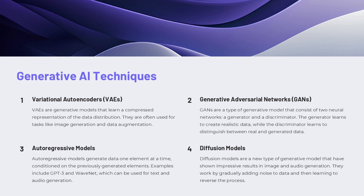Variational autoencoders, VAEs, are a type of generative model that learn a compressed representation of the data distribution. They are often used for tasks like image generation and data augmentation, as they can generate new samples that resemble the training data. VAEs work by learning an encoder network that maps the input data to a latent representation, and a decoder network that generates new samples from the latent space.